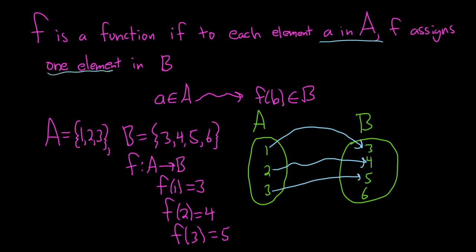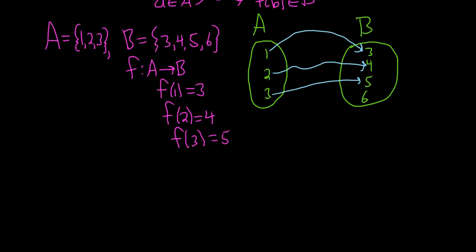Notice it says one element — so you can't have one element going to two different numbers; in that case it would not be a function. So as a recap, function notation is f: A → B, where A is called the domain and B is called the codomain.